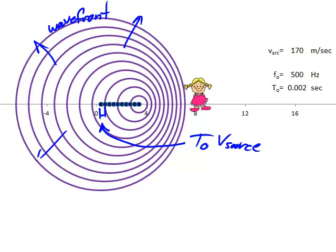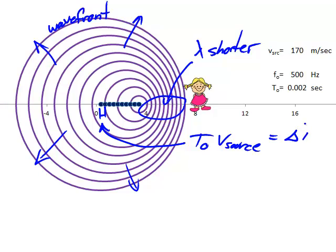Each wavefront, as it expands, is forever centered on the spot where it was born. In the direction the source is moving, the wavefronts or compressions are spaced closer to each other than they would be if the source weren't moving — that is, the wavelength is shorter. The change in wavelength is the distance the source moves during the time from one compression to the next, the period: delta-lambda equals v-source times T-naught, or equivalently, delta-lambda equals v-source over F-naught.